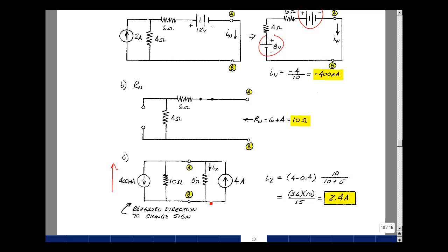Some current goes here, some goes here, and if I want the current in this one, I could take the other resistance over the sum of the two. That was our resistive current divider, and that's the expression over here. And then I'm getting 3.6 times 10 over 15, and that's 2.4 amps.